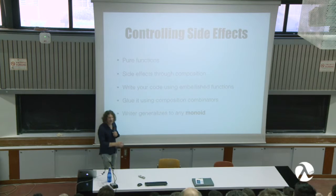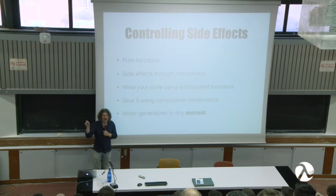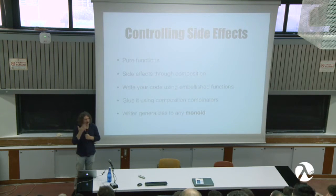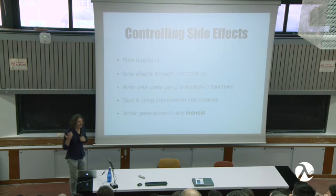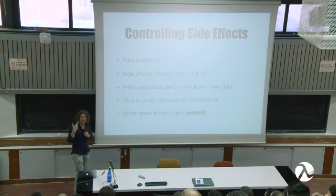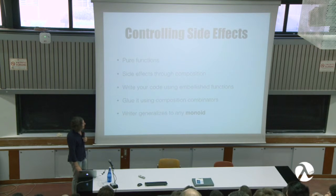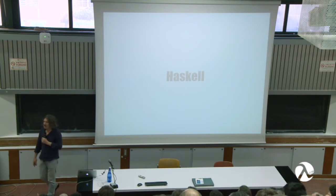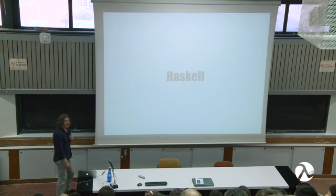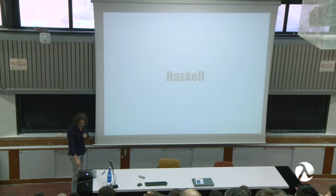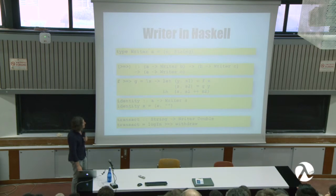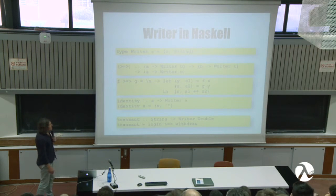One trivial generalization: I can use a monoid here instead of strings, because the only things I use are plus and the empty string. I can replace plus with whatever monoid operation I have and empty string with monoid identity, and it still works. So maintenance of this program is now much easier, because I understand it can work with any monoid. Let me show you some Haskell code to show how much easier it is to do this in Haskell, and because I can talk about other classic categories easier with Haskell, and of course they can all be translated into C++.